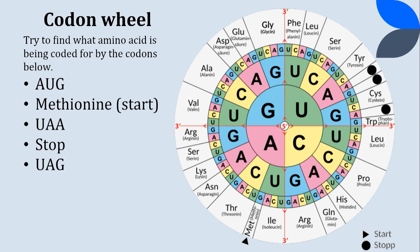Let's try UAG — start in the middle and work your way out. UAG is also a stop codon. And one more: UGA — UGA is also a stop codon. So most of the outer entries on the codon wheel are amino acids like valine, glycine, and phenylalanine, but some are stop and start codons.